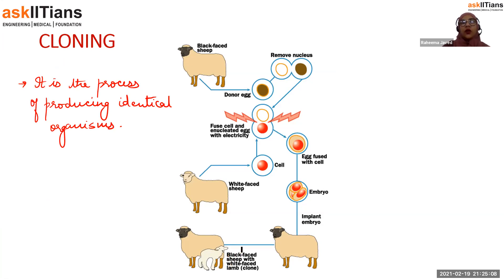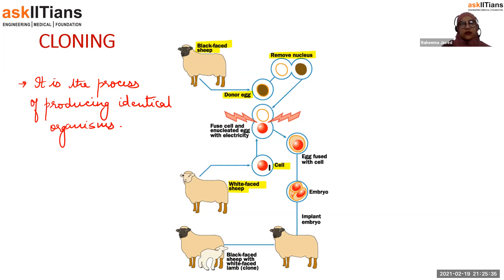I am going to explain how Dolly the sheep was produced. A black-faced sheep was taken as a donor for the egg, and the nucleus of the egg was removed. A white-faced sheep was taken to donate a somatic cell — any vegetative cell from its body — and its nucleus was kept intact. These two cells were fused with the help of electricity.